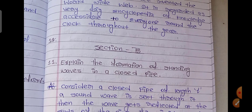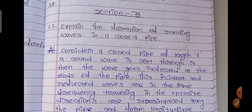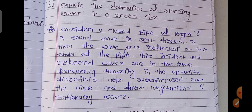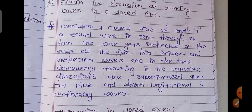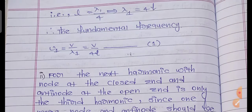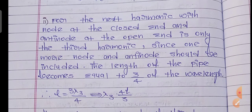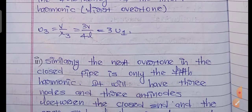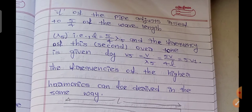I have completed Section A — 10 questions. Now I am going to show Section B questions. These questions each carry four marks; according to four marks you have to write the answer. If the answer is very lengthy, pick up the important points when reading. This is the 11th one: explain the formation of standing waves in a closed pipe. Here is the continuation of this answer, including formulas.